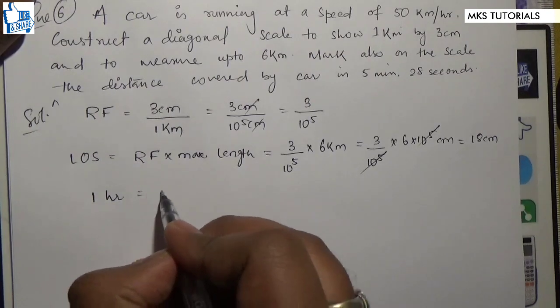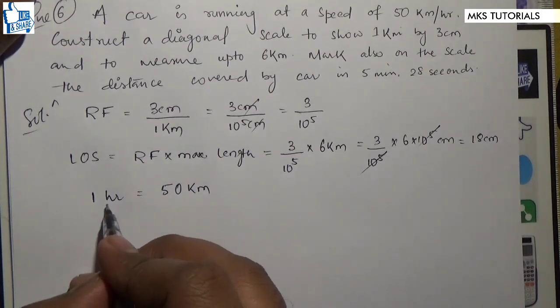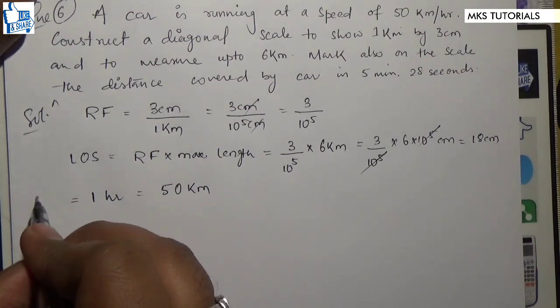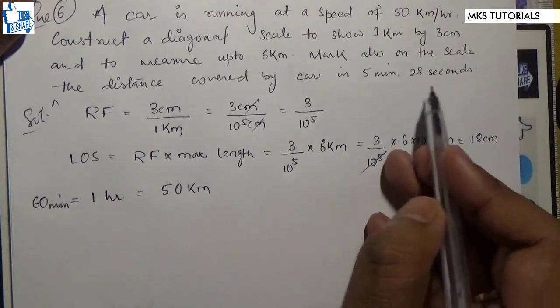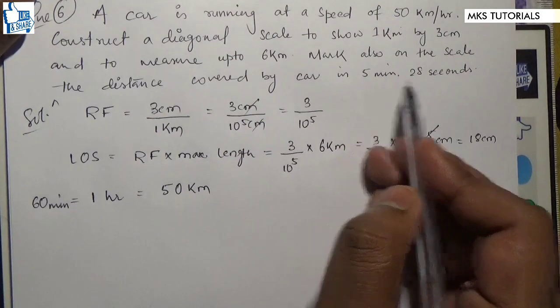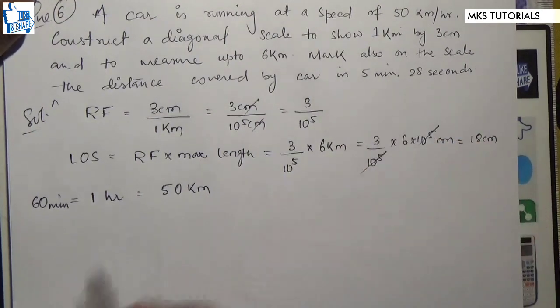1 hour is 50 kilometers. 1 hour is 60 minutes. So 5 minutes plus 28 seconds.